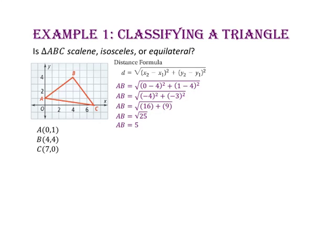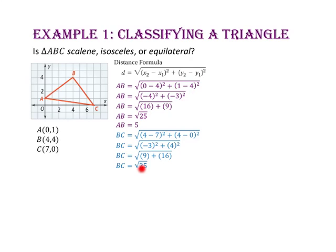Now let's use the ordered pairs for points B and C to find the length of segment BC. The length of segment BC equals the square root of (4 minus 7) squared plus (4 minus 0) squared. 4 minus 7 is negative 3, and 4 minus 0 is 4. Negative 3 squared is 9, and 4 squared is 16. 9 plus 16 is 25, and since the square root of 25 is 5, the length of segment BC is 5. Since the length of segment AB is 5 and the length of segment BC is 5, we at least have an isosceles triangle.